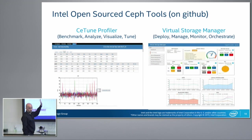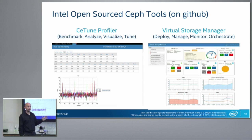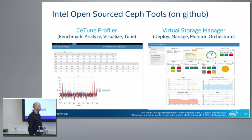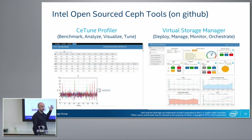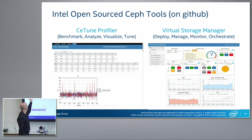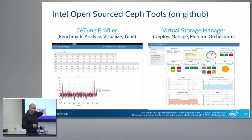A quick overview of a couple of tools we open sourced to help the community. When you're developing for Ceph, on Ceph, or inside of Ceph, there's going to be a need to actually profile what you're doing. So we open sourced something called C-Tune. The focus of C-Tune is benchmarking, analyzing what you did, visualizing it, and then tuning your software.